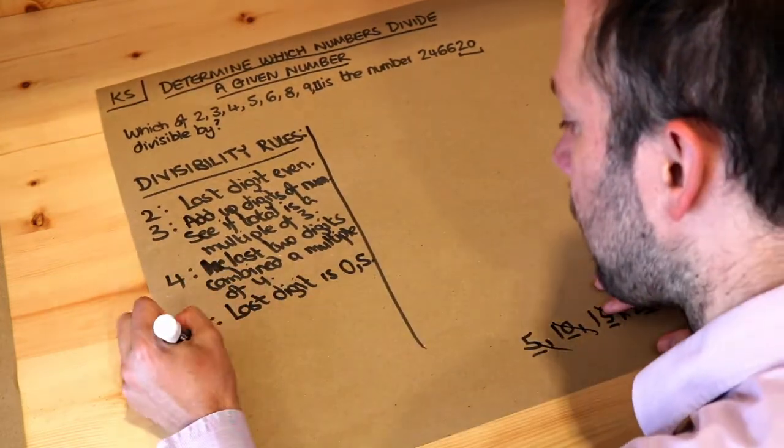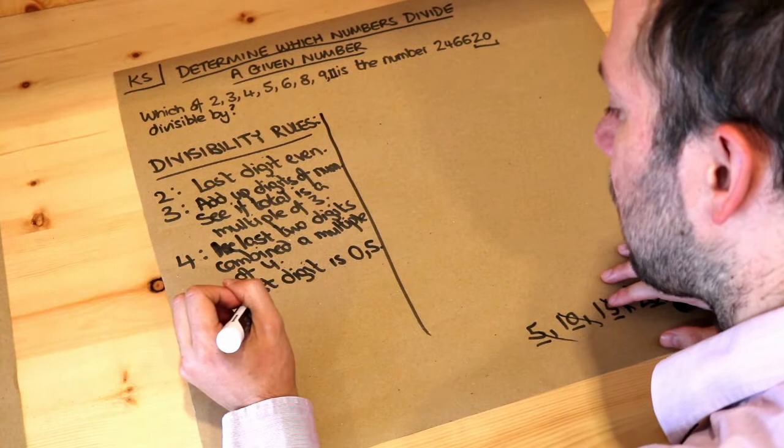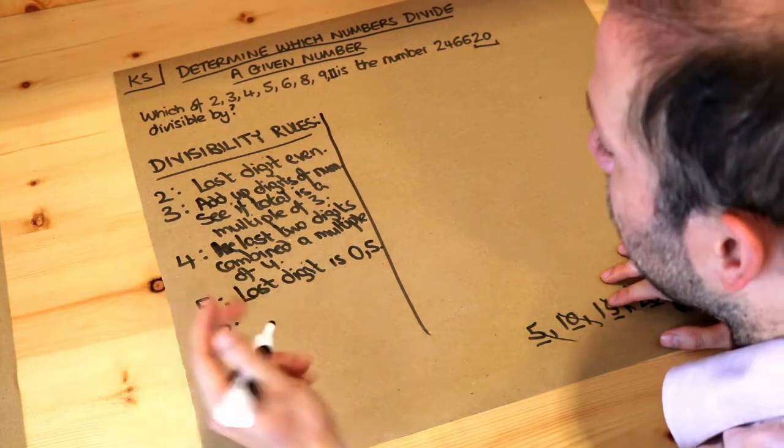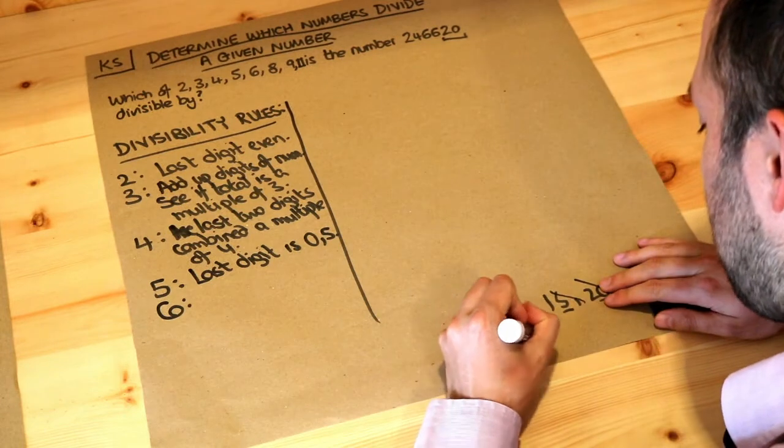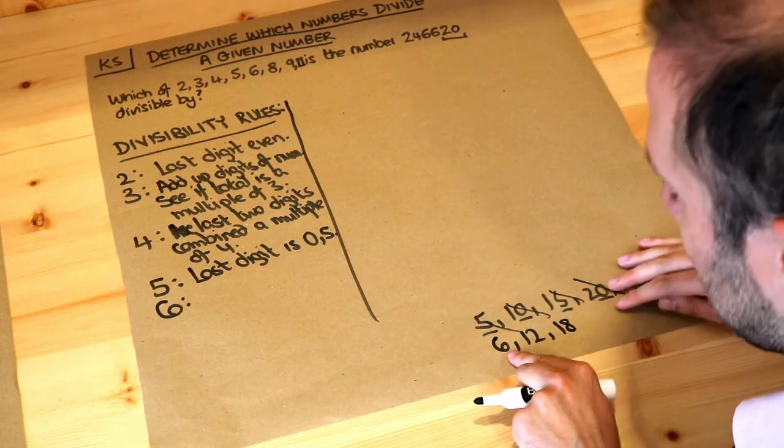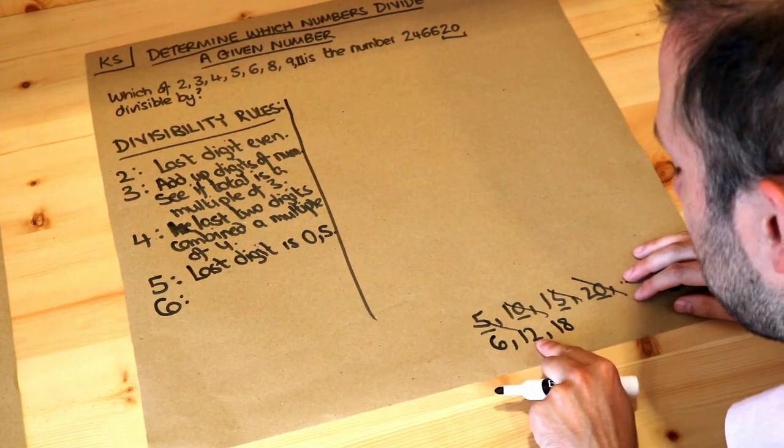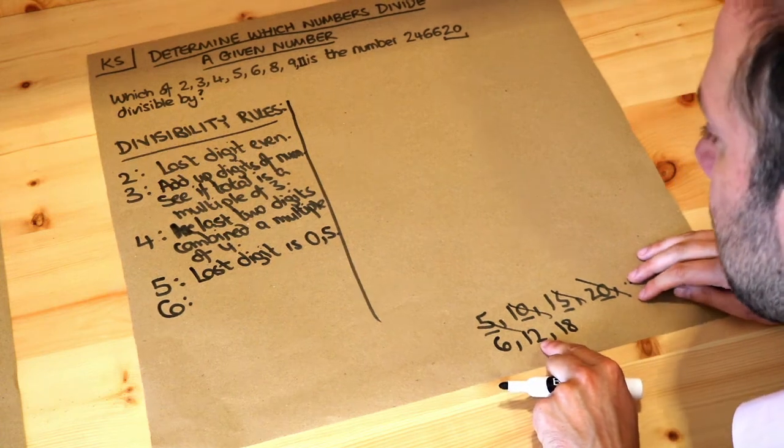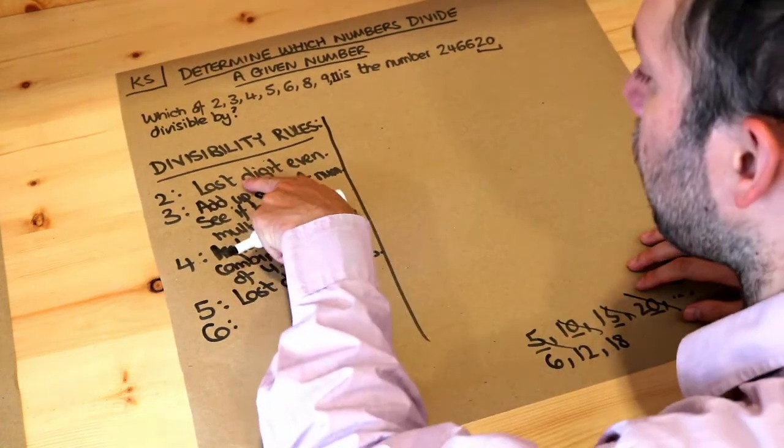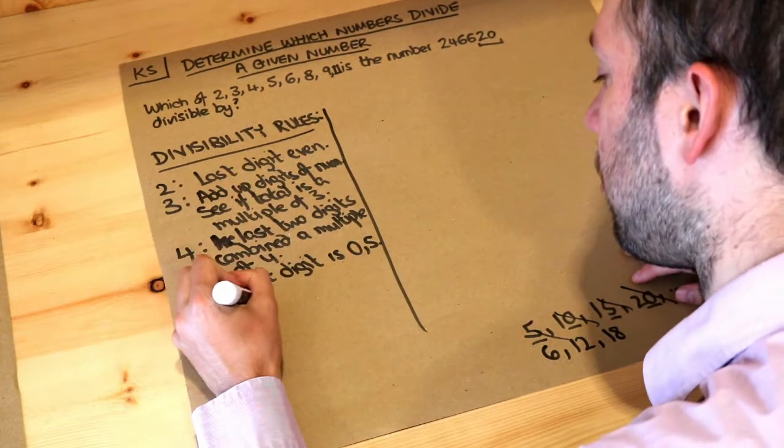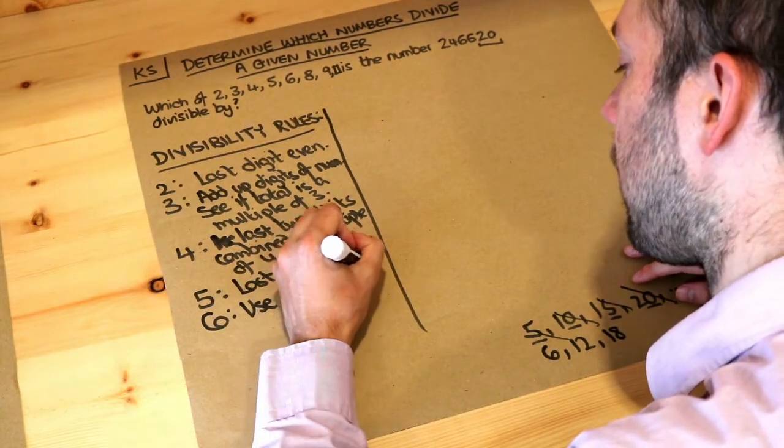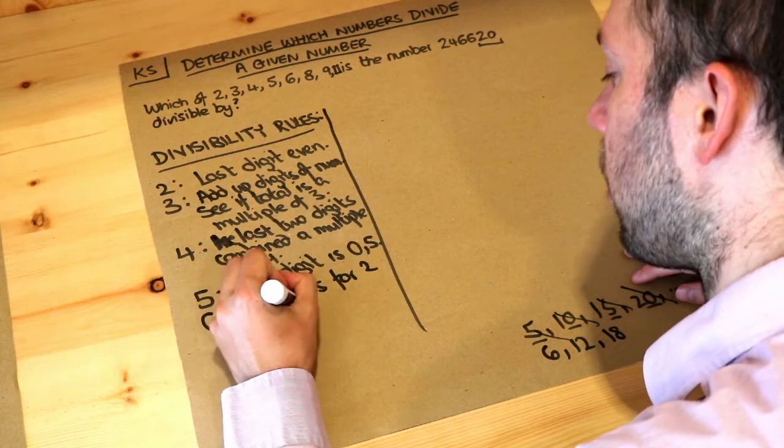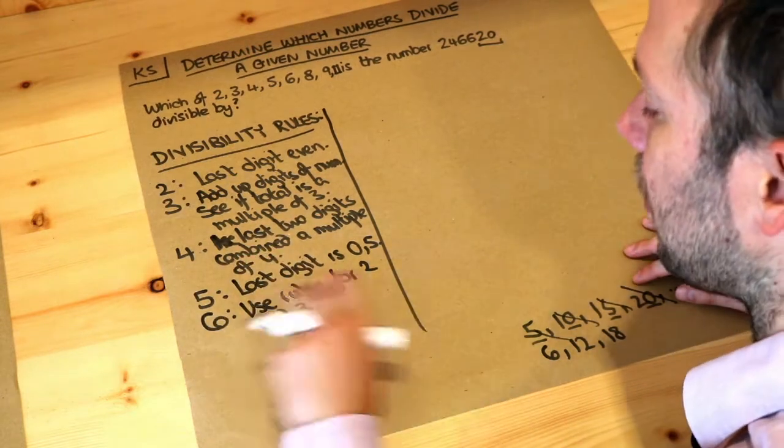What about 6? Well if it's in the 6 times table then it's also in the 2 times table and the 3 times table. Just think about like 6, 12, 18, multiples of 6. That's in the 2 times table and the 3 times table. So we're therefore going to use the rule for 2 and for 3. So use the rules for 2 and 3 and both have to work, the 2 rule and the 3 rule, for the 6 to work.